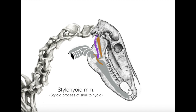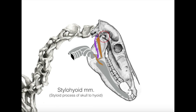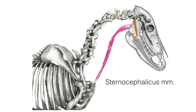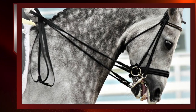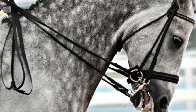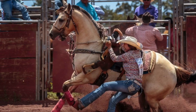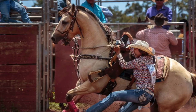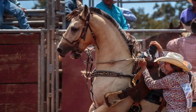The stylohyoid muscle connects the styloid process of the skull to the hyoid apparatus and serves to retract and elevate the base of the tongue. The sternocephalicus muscle originates at the sternum and inserts on the ramus of the mandible. This muscle serves to open the mouth, flex the neck, and pull the head down. A horse straining against the bit is overusing this muscle.